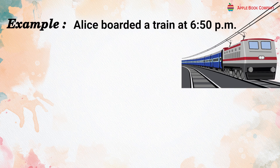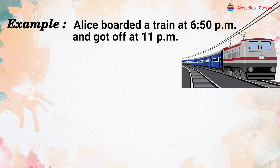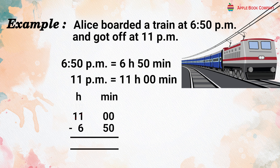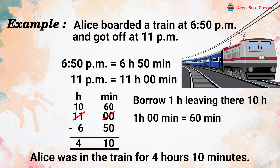Example: Alice boarded a train at 6:50 PM and got off at 11 PM. How long was she on the train? Both times are PM, so no conversion needed. 6:50 PM = 6 hours 50 minutes; 11 PM = 11 hours 00 minutes. Subtracting: borrow 1 hour, leaving 10 hours; 60 − 50 = 10 minutes; 10 − 6 = 4 hours. So Alice was on the train for 4 hours 10 minutes.